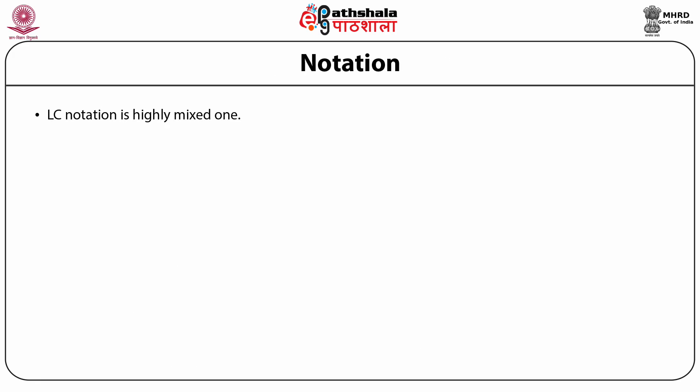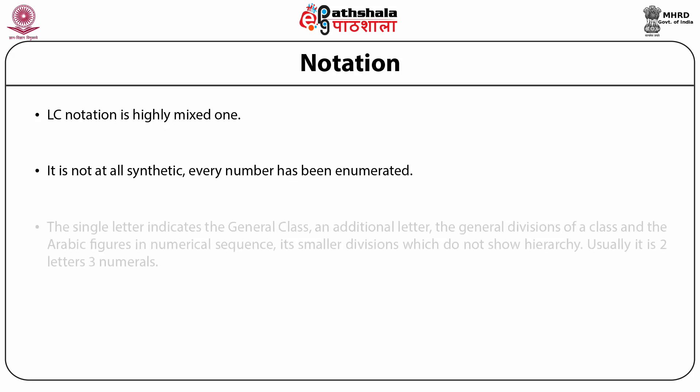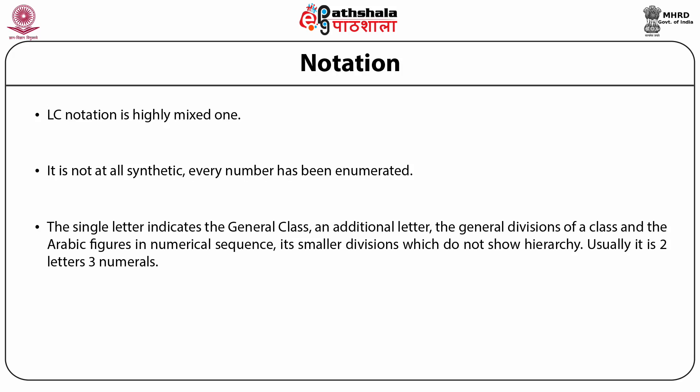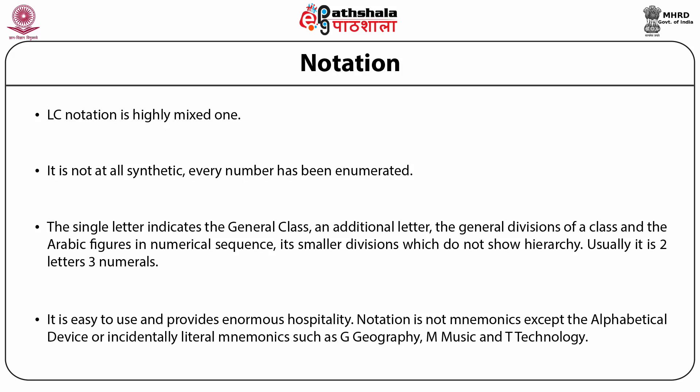Notation: The LC scheme notation is a highly mixed one, which comprises of alphabets and numerals, which are systematical in nature. The notation is not at all synthetic. Every number has been listed or enumerated. The single letter indicates the general class, an additional letter the general divisions of a class, and the Arabic figures in numerical sequence its smaller divisions, which do not allow hierarchy. Usually it is expressed in two letters or three numerals. It is easy to use and provides enormous hospitality. Notation is not mnemonic except the alphabetical device or incidentally literal mnemonics such as G Geography, M Music, and T Technology.